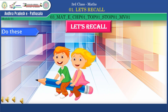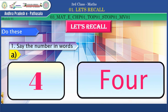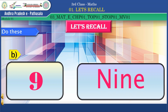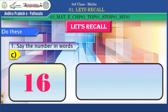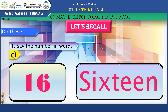Now we go to the next activity called 'Do These.' Some numbers are here — observe them and say the number in words. Four hundred and fifty rupees — the number four, in words: F-O-U-R, four. Next, the number nine, in words: N-I-N-E, nine. What is the next number? Yes, 16. Say in words: S-I-X-T-E-E-N, sixteen.